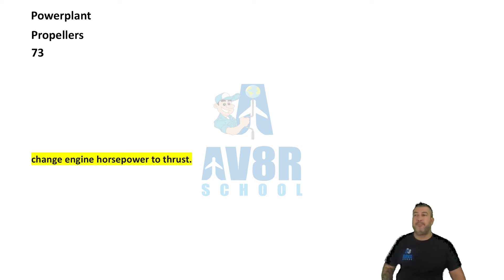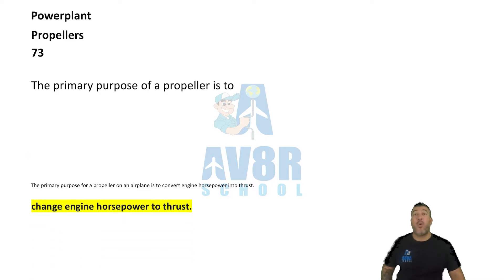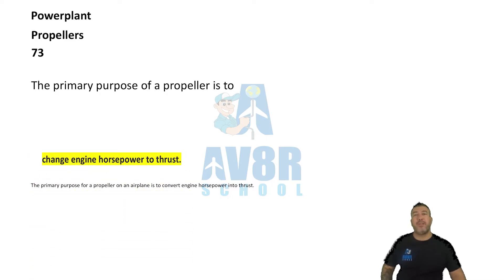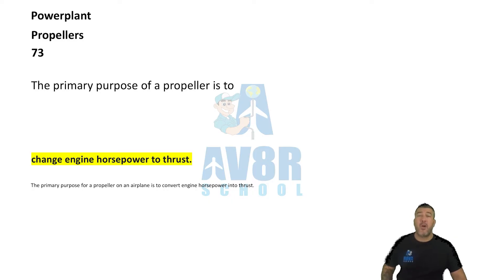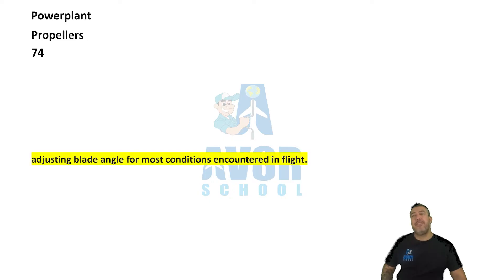Number 73: The primary purpose of the propeller is to change engine horsepower to thrust.